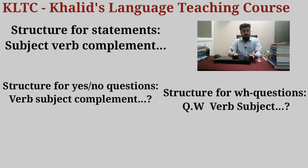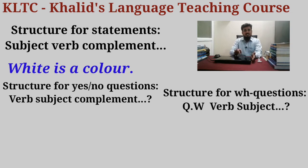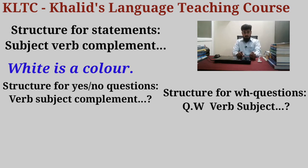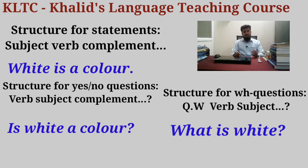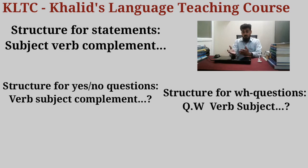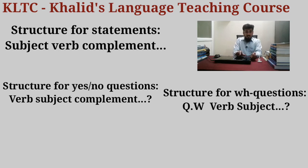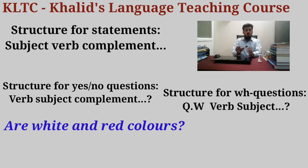Now the example with white. The subject is white — white is an adjective describing a color. 'White is a color' — color is singular. So the statement is: 'White is a color.' The yes or no question: 'Is white a color?' The WH question: 'What color is white?' Similarly, red — 'Red is a color.' 'Is red a color?' 'What color is red?' The subject-verb-complement structure applies with white and red.